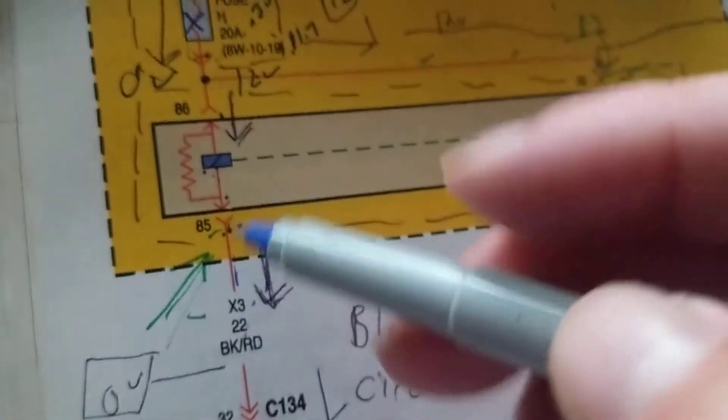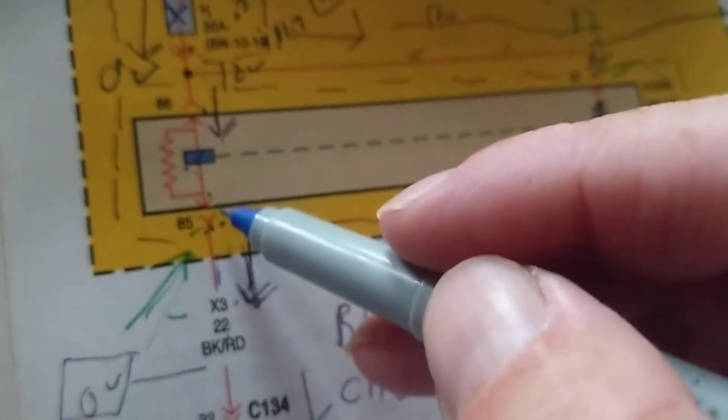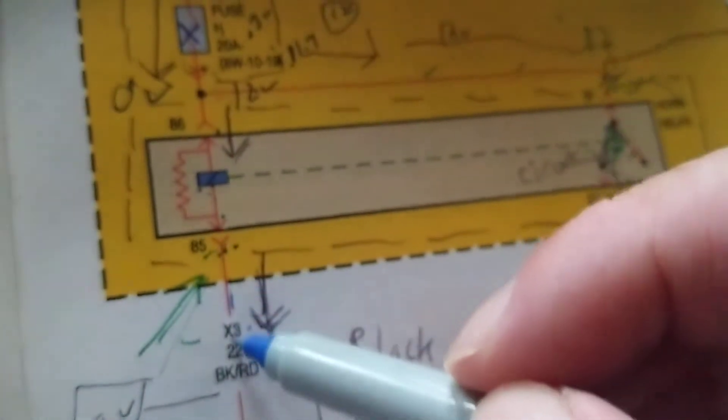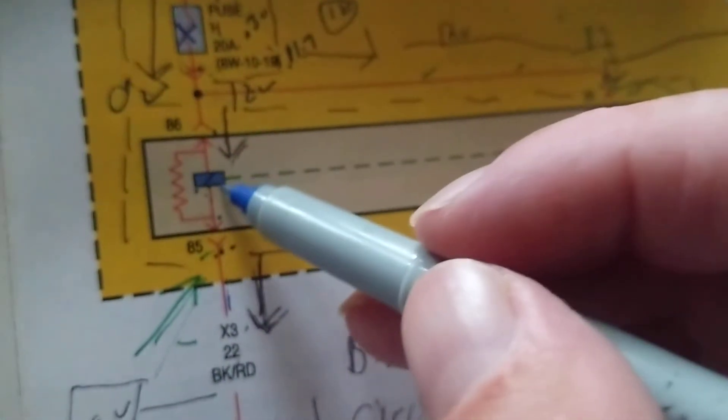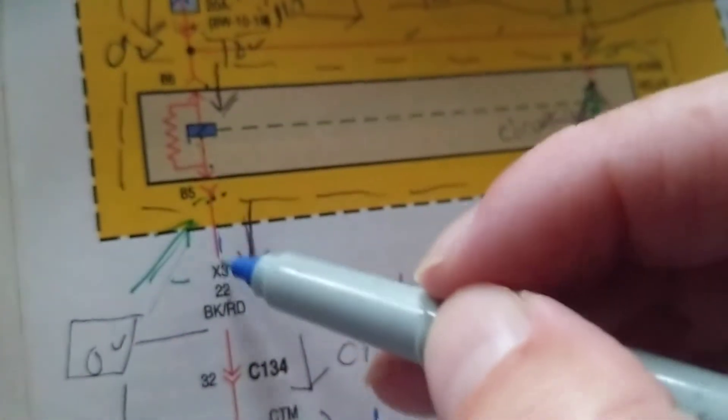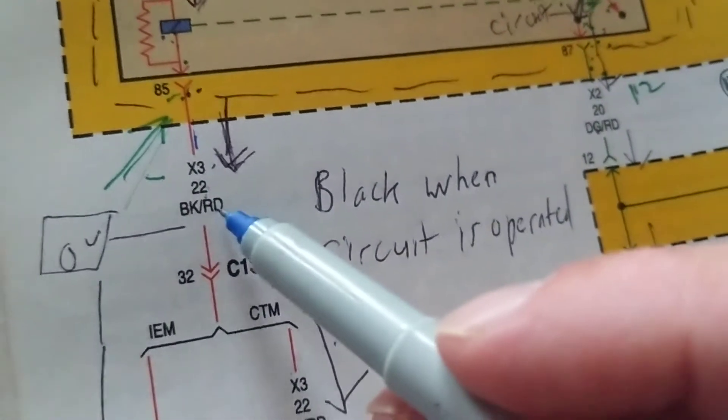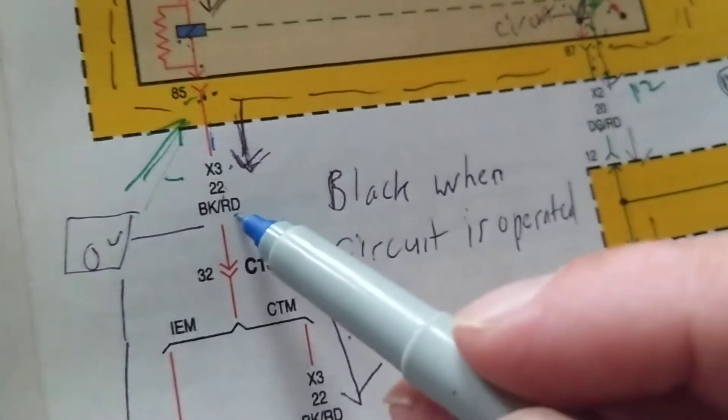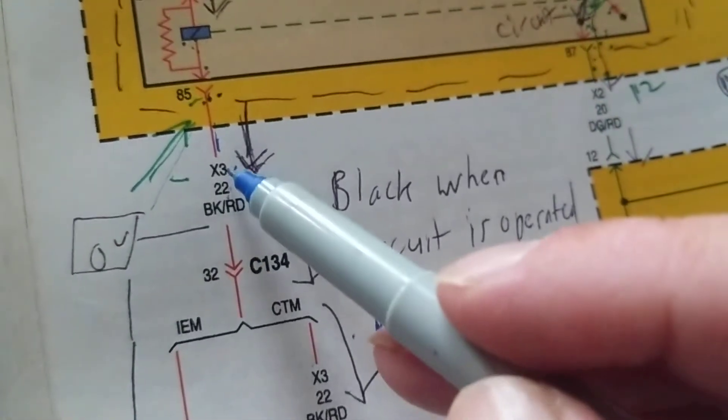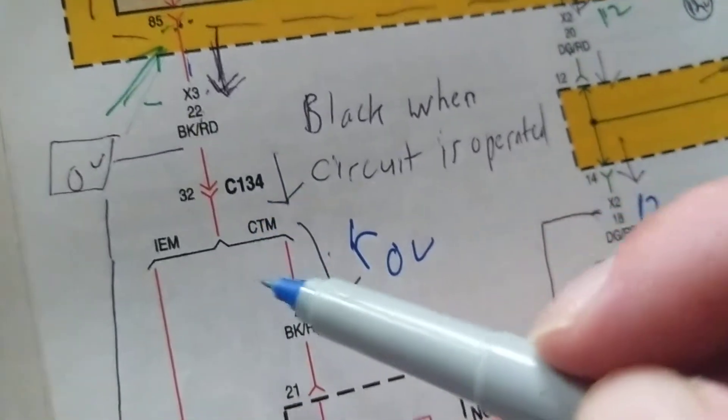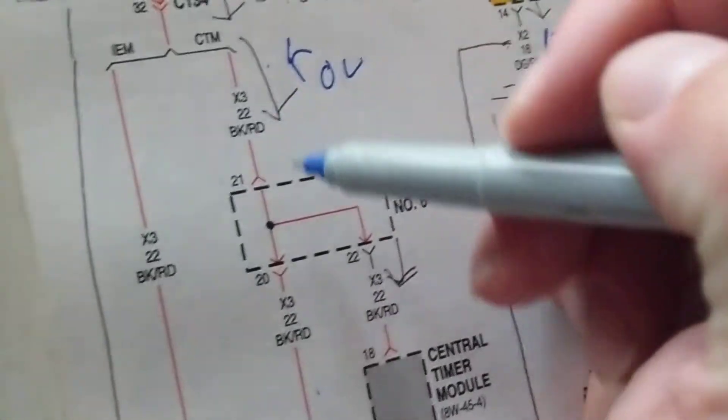If we expect 86 to be connected to 12 volts, we should expect 85 to be connected to what? A ground. A ground meaning either a computer gives it a ground or a physical ground. Let's continue in this path. So this is the symbol for the coil. In this diagram we go over here, we go over here to 85. And now we come to a black and red wire, meaning the striped wire - the stripe is the red. So we come over here, we come over here to a connector C134.